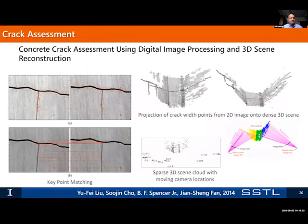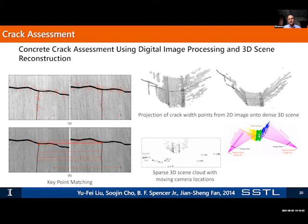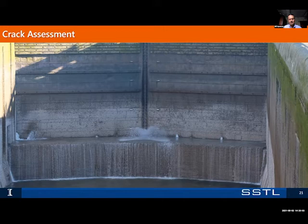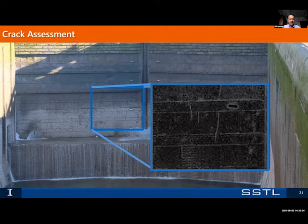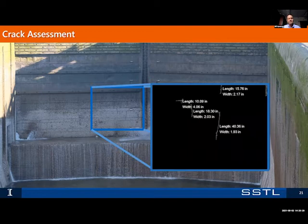Another possibility is assessing cracks in structures. Work has been done on concrete and steel structures. Some of my students did work on assessing the size of concrete cracks automatically and creating 3D renderings so one can interpret the crack. We've extended that to crack assessment with the U.S. Army Corps of Engineers — on a lock gate on the Mississippi River, you can see things that look like cracks versus seams. Using computer vision, we can identify those cracks, calculate their length and width, and continuously monitor them.